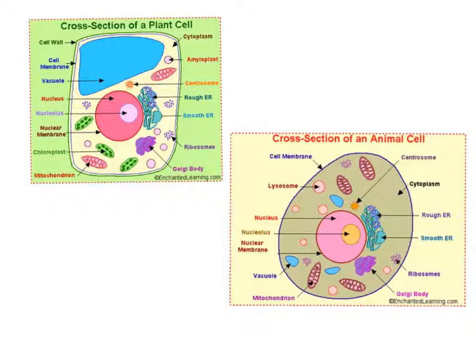The next definition is organ. An organ is actually a part of your body that helps your body function and survive. Examples of organs would be your heart, liver, and kidneys.